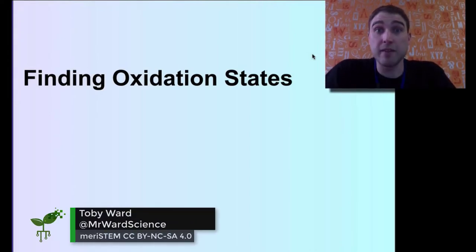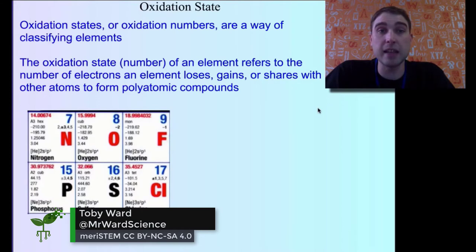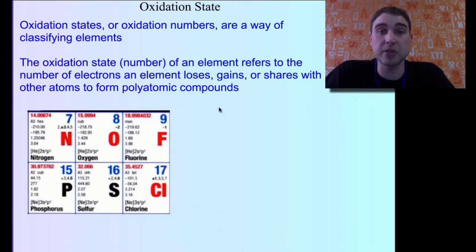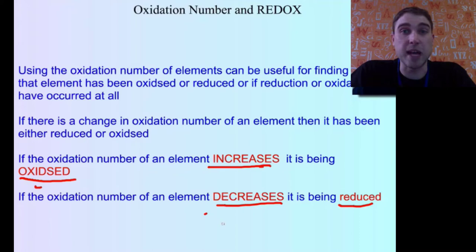Today on Flipping Science we're looking at finding oxidation states and oxidation numbers. This is a handy thing to do because it tells you how many electrons are being lost, gained or shared with other atoms in polyatomic compounds. It also gives you a hint about what's going to happen in terms of a redox reaction.